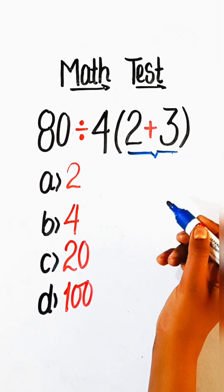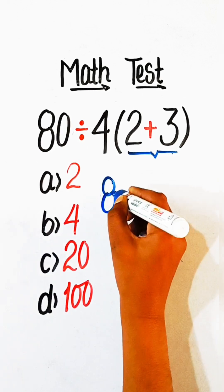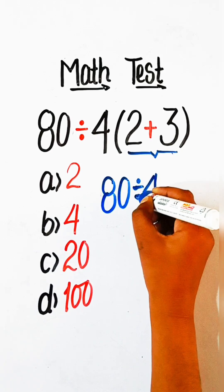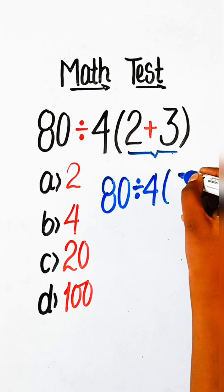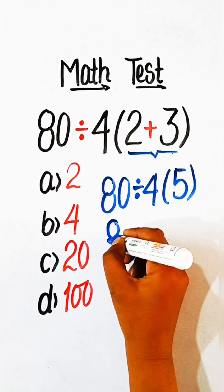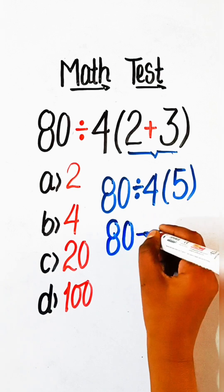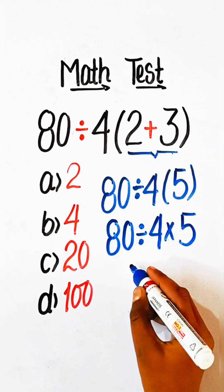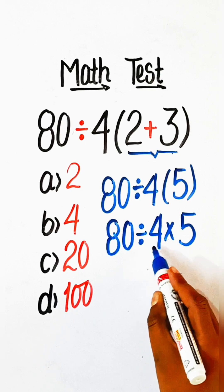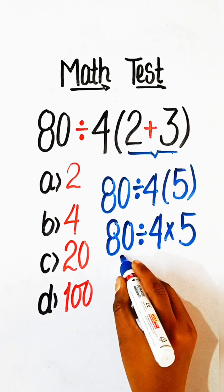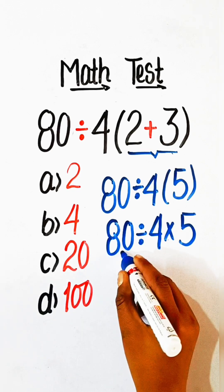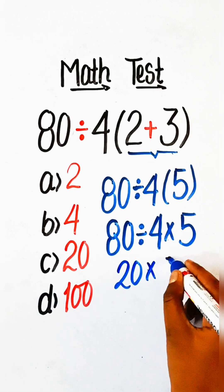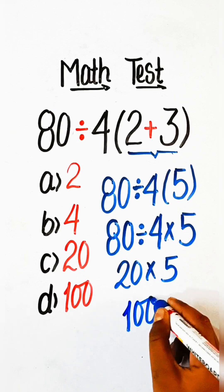First we have to solve the bracket part. 80 divided by 4, and 2 plus 3 is 5. Here we have division and multiplication, so we do the operation left to right: 80 divided by 4 is 20, multiply by 5 is 100.